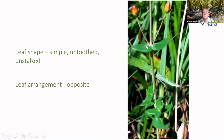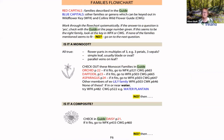The leaf shape is simple, untoothed, unstalked, and the leaf arrangement is opposite. You can also see that the leaves are clasping the stem — not stalked, actually wrapped around the stem and almost joining each other. So we go to the pocket guide at page F6 where we start going through the family's flow chart.